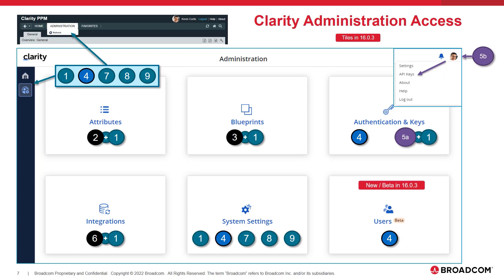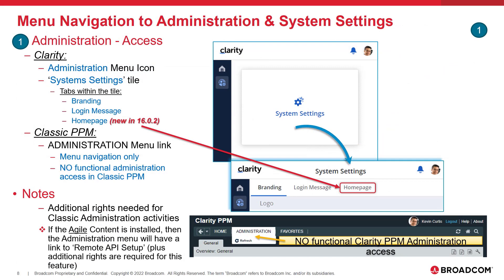A new tile for user management is now available as a beta enhancement. The primary right that provides navigational access into the Classic PPM and Clarity Administration areas is the Administration Access right. This right automatically gives the administrator access to the Clarity System settings tile. This will then give the administrator the ability to update the branding logo, the login message, and to set up user home pages within Clarity. Although it provides navigation into the Classic PPM Administration menu, it provides no additional functional administration access unless additional rights are granted.